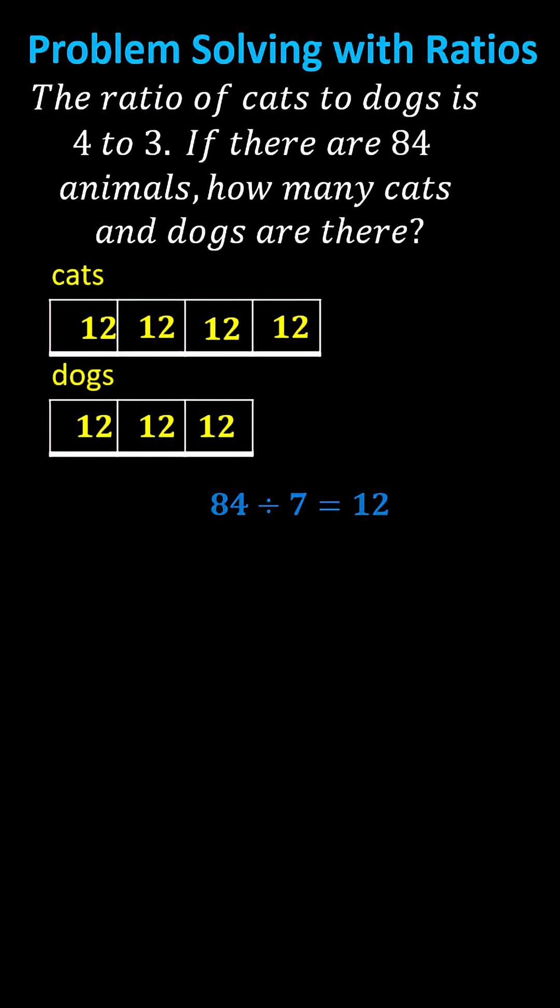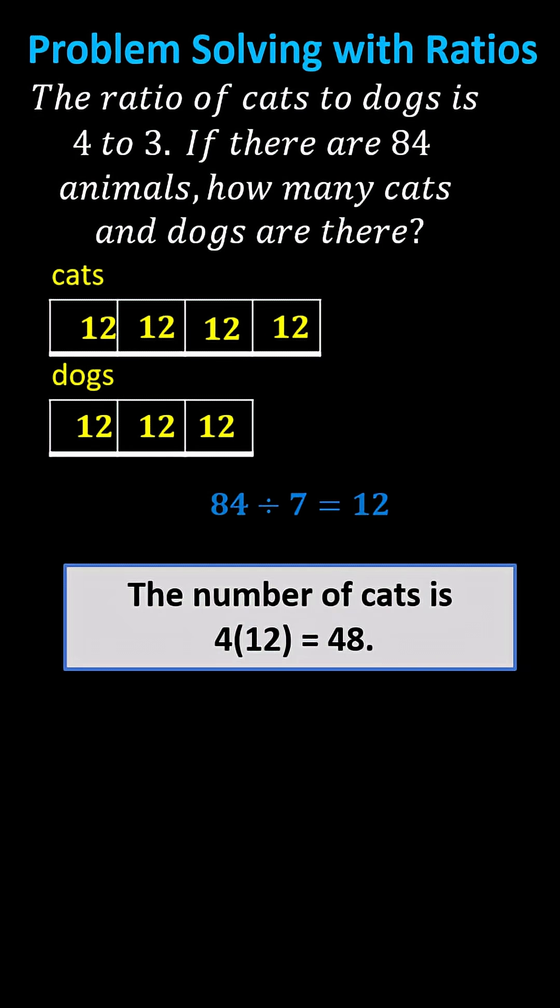The number of cats is equal to four times 12, which is 48. And the number of dogs is equal to three times 12, which is 36.